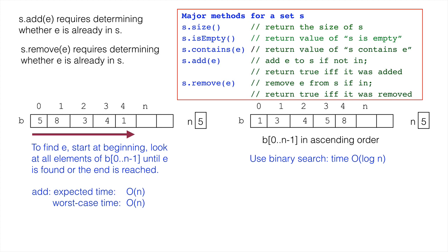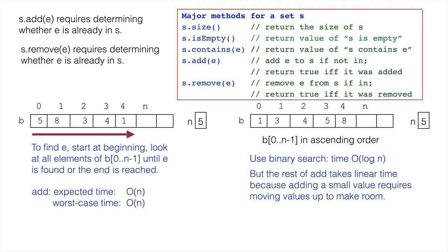However, operation add would still take expected case and worst case time O(n), because adding a very small value requires moving everything up one element. For example, adding 2 to 1, 3, 4, 5, 8 requires moving 3, 4, 5, 8 up one position in the array.